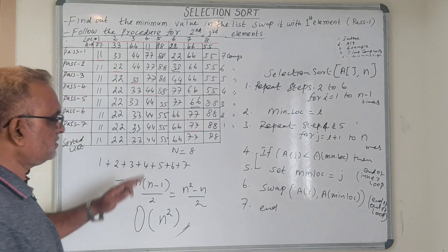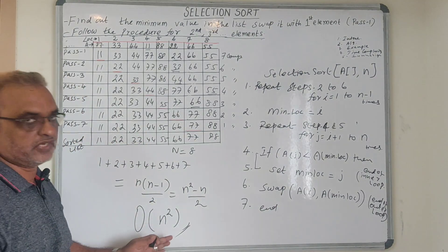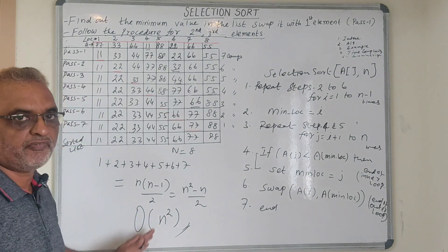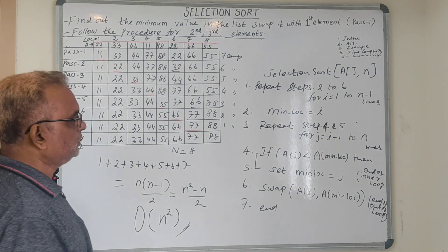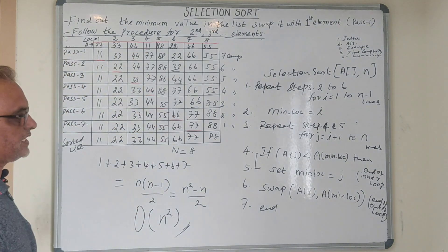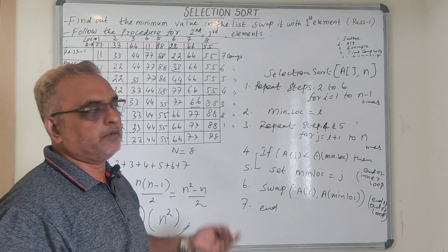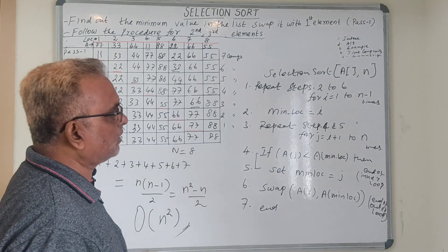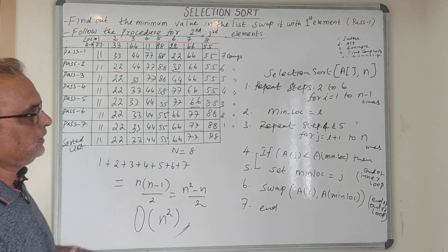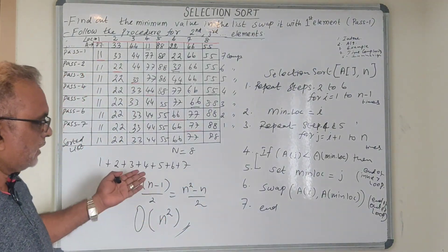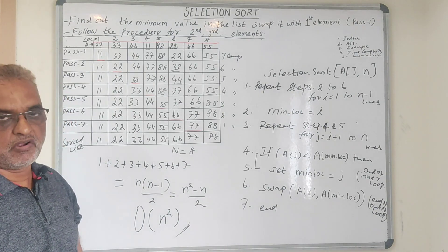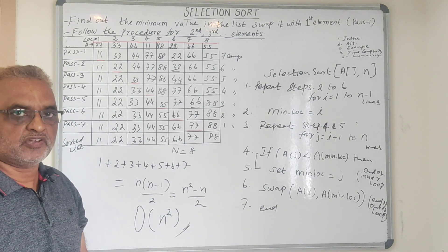Make a note of this — it can be asked as a separate question: what is the time complexity of selection sort? The answer is O(n²). This is how we perform selection sort. I gave the introduction, the algorithm, explained it with an example, and calculated the time complexity. I hope you understood the concept. Thank you, keep watching. Bye.